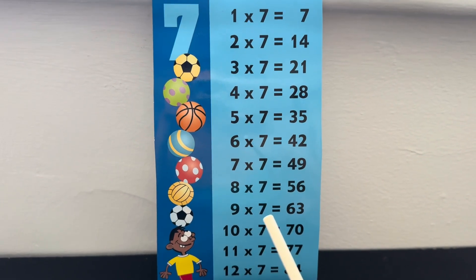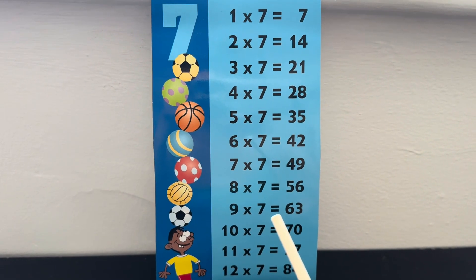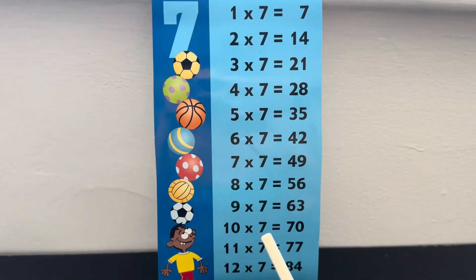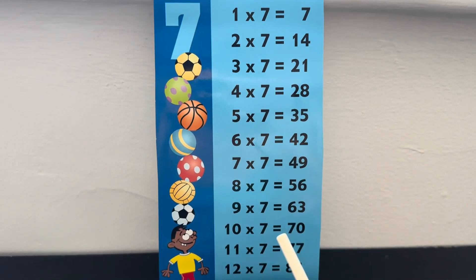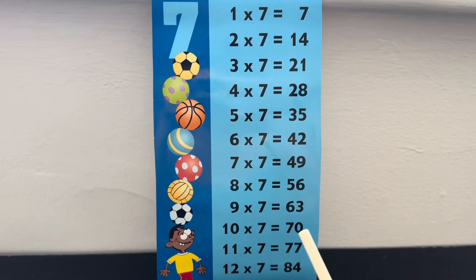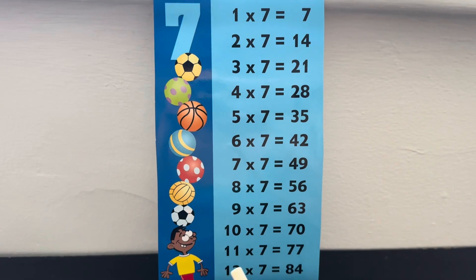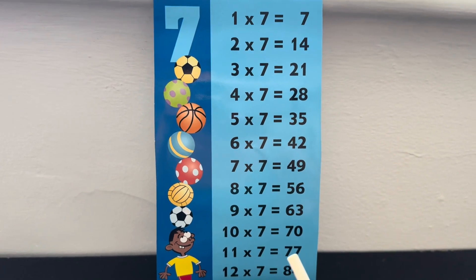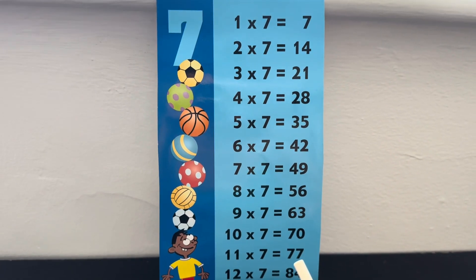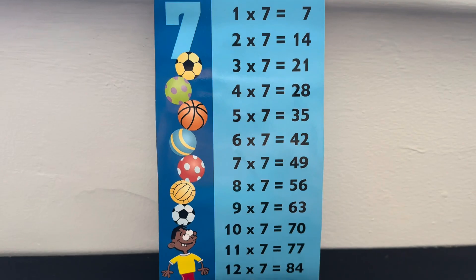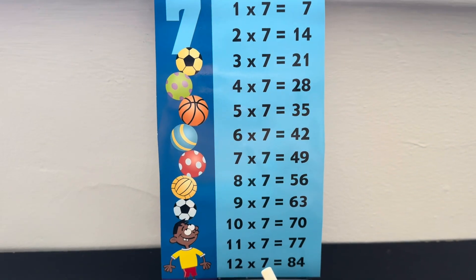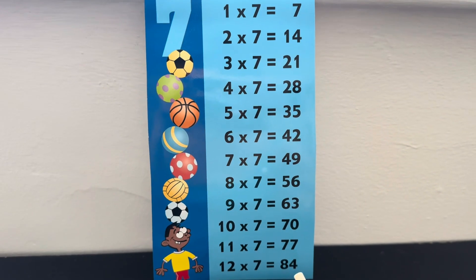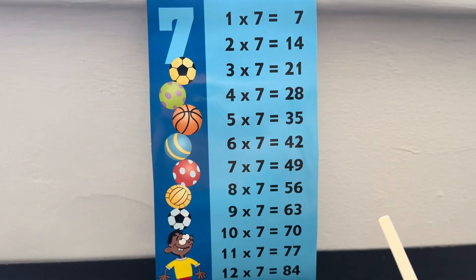9 times 7 is equals to 63. 10 times 7 is equals to 70. 11 times 7 is equals to 77. And lastly, 12 times 7 is equals to 84.